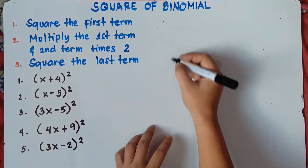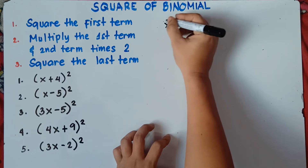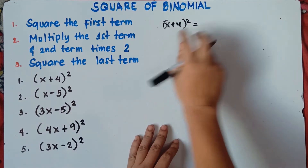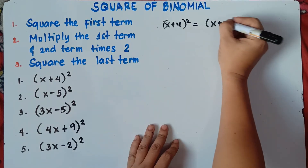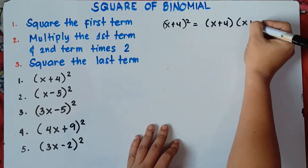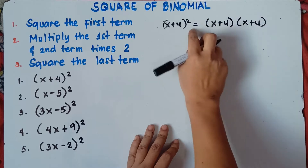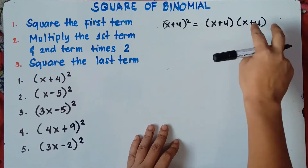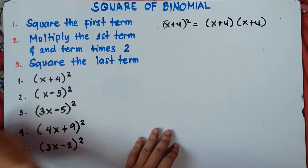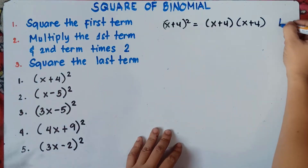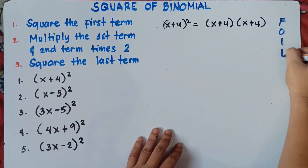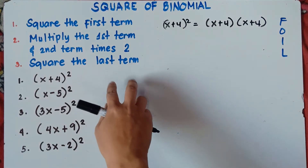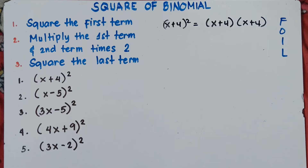Now let's answer number 1: x plus 4, quantity squared. We know that x plus 4 quantity squared can be written as x plus 4 times x plus 4, because squared means you multiply the expression by itself twice. Now if we do the FOIL method — First, Outer, Inner, Last — let's do FOIL and then later do the square binomial method to check if they have the same answer.